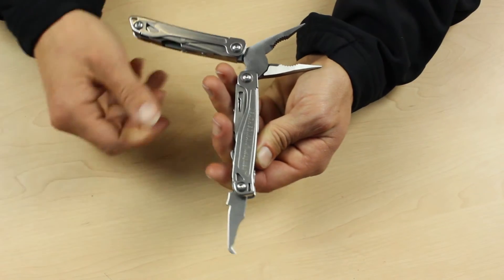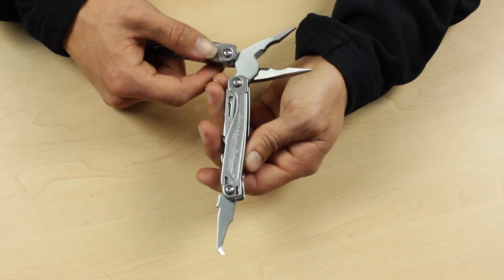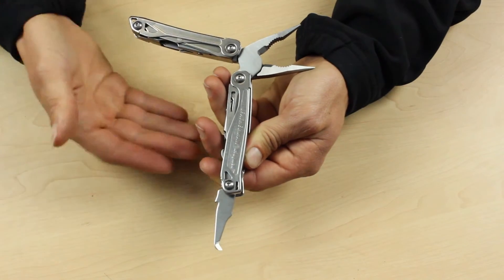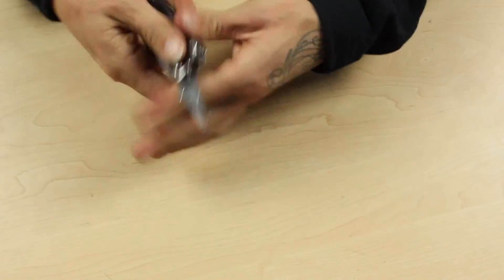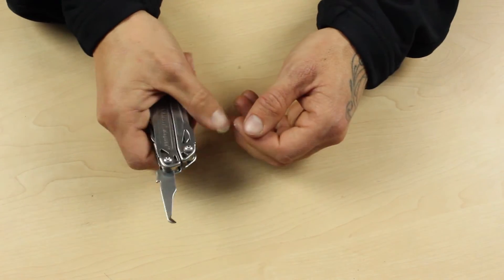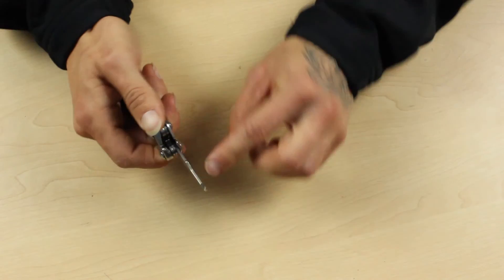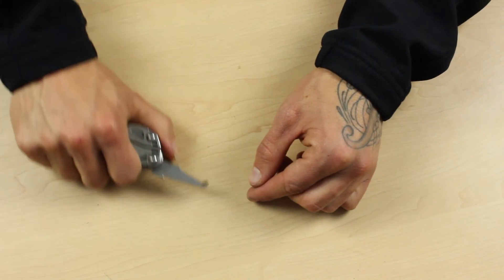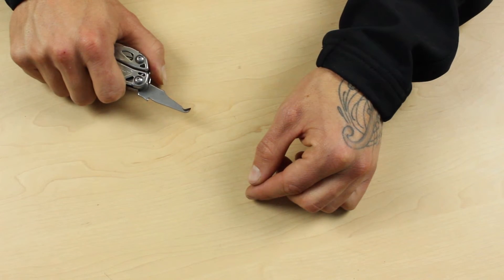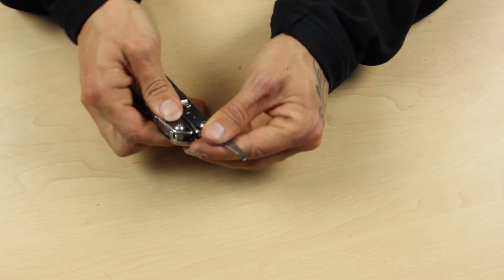Often when you're trying to get at whatever you've bought and you go at it with a knife, you end up stabbing through the plastic and into whatever you've bought. What this has got, and it closes up nicely to sit in a hand like that, is a hooked blade and a blunt nose over there so you can catch the corner of a blister pack package and get a really nice action through there.